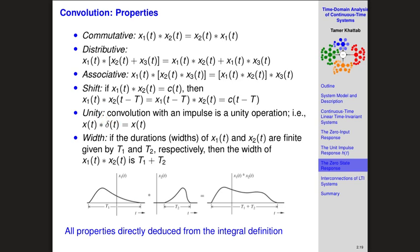Another important property is the unity property. Just as zero is the unity for addition (X + 0 = X) and one is the unity for multiplication (X × 1 = X), the delta function is the unity for convolution. Any function X convolved with the delta function gives back X unchanged. The delta function is the unity for the convolution operation.